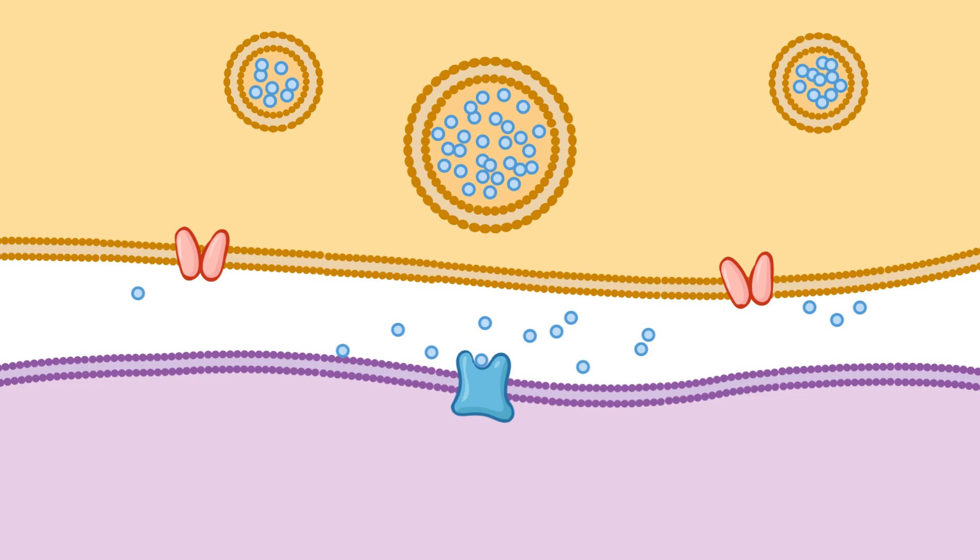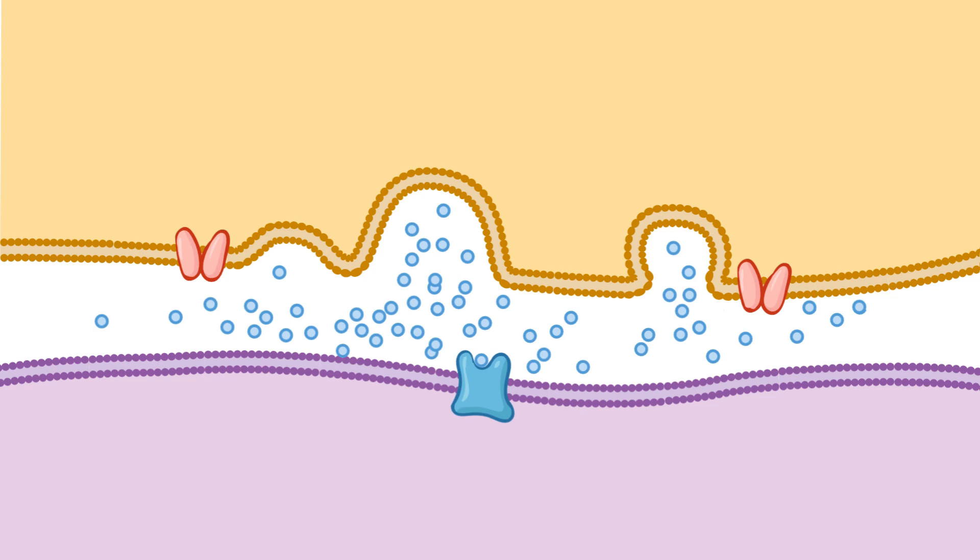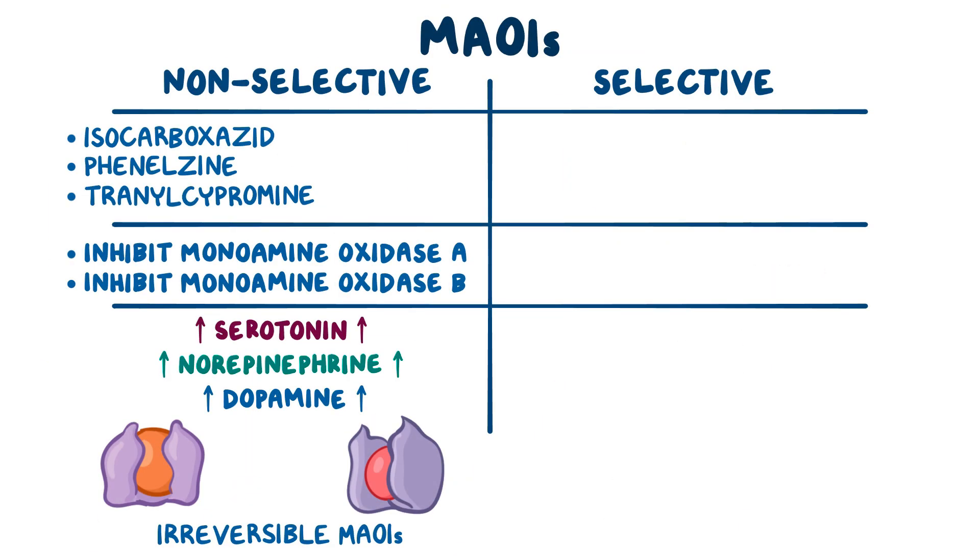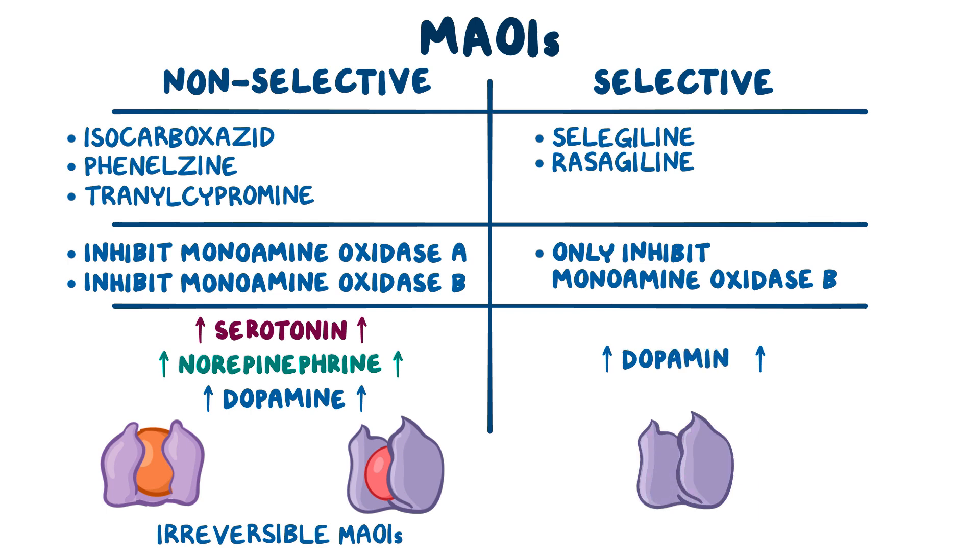So, the next time an action potential reaches the presynaptic membrane, more neurotransmitters are released into the synaptic cleft and alleviate the symptoms of depression. On the other hand, selective MAO-B inhibitors like selegiline and rasagiline will only inhibit MAO-B, so they only increase the level of dopamine.